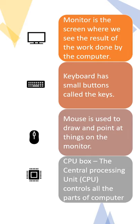Monitor is the screen where we see the result of the work done by the computer. Keyboard has small buttons called the keys. Mouse is used to draw and point at things on the monitor. CPU is known as the central processing unit and controls all parts of computer.